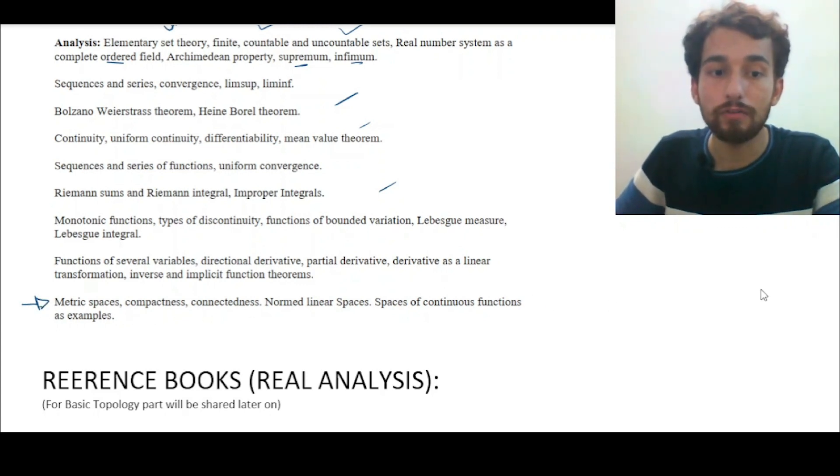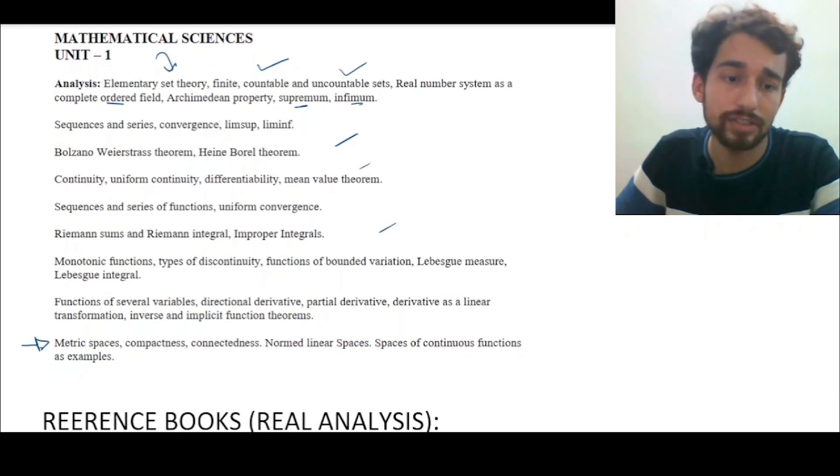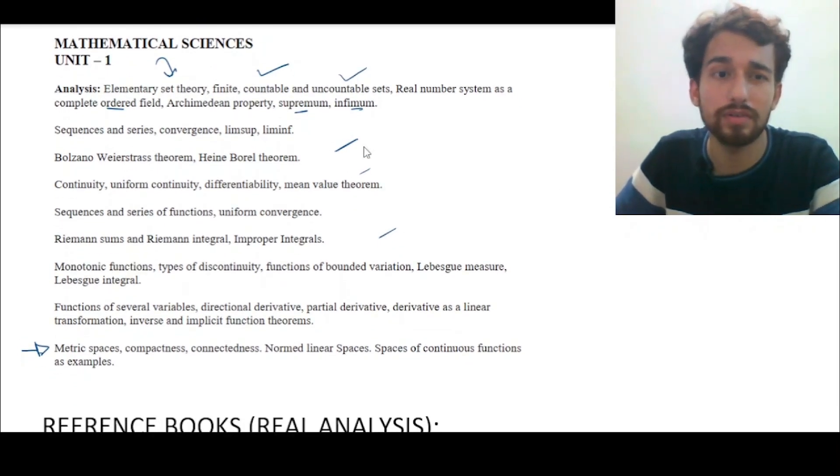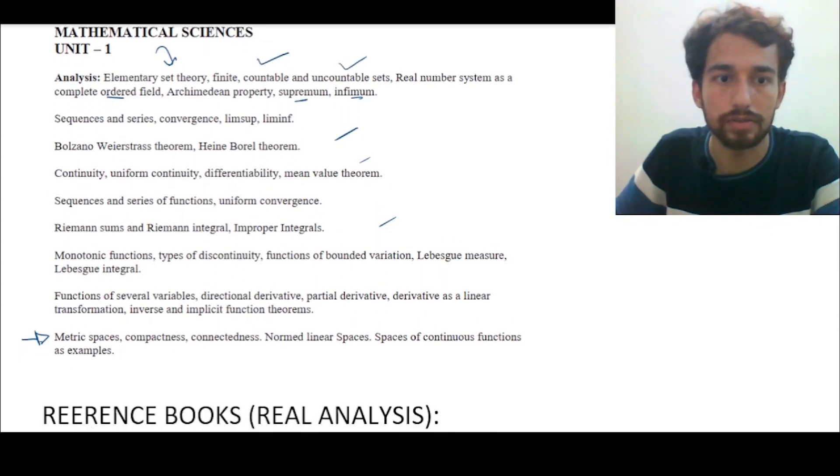If you see here, at the very last, it includes some notions from metric spaces, compactness, connectedness, normed linear spaces, space of continuous functions, etc. These notions, whenever someone is going through a first elementary course in real analysis, are not covered at the very early stage. But as they are mentioned here, they are a basic part of topology course. There they should come at the very beginning of the course. But we will try to cover it also.